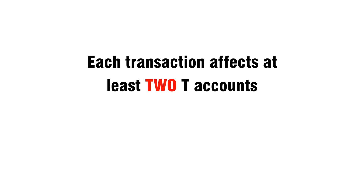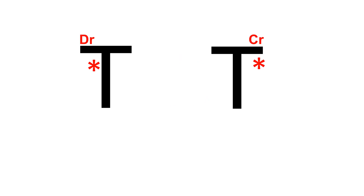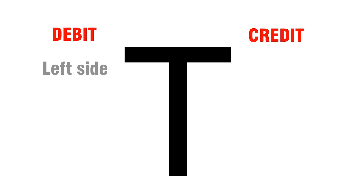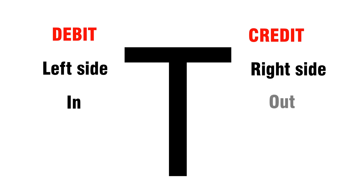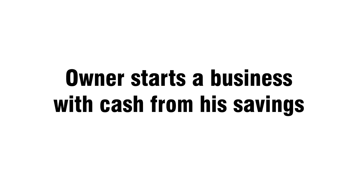Ledgers: each transaction affects at least two T-accounts — one is a debit entry, one is a credit entry. Debit, credit. Left side, right side. In, out. Have, don't have. Receive, give.